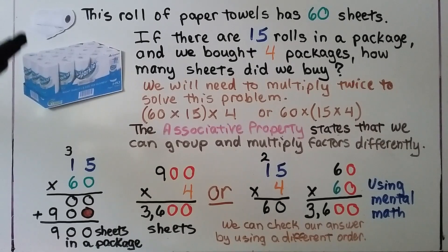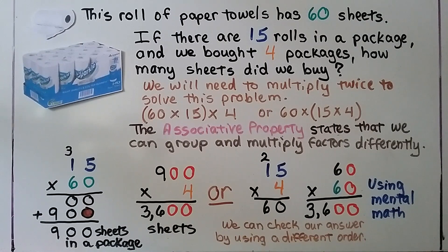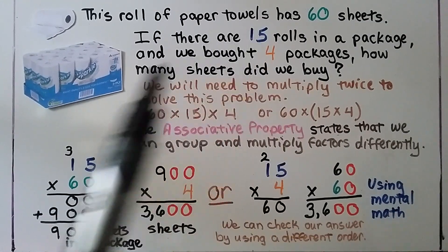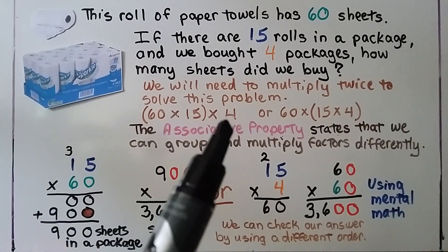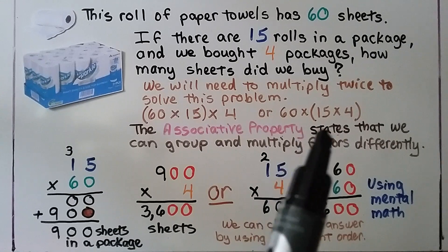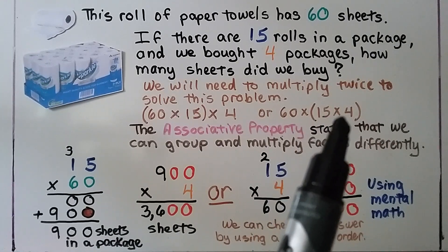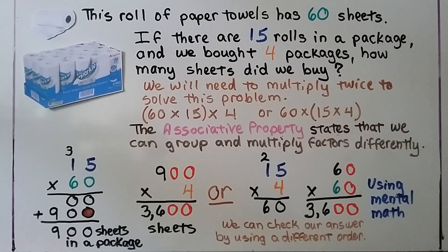This roll of paper towels has 60 sheets. If there are 15 rolls in a package, and we bought 4 packages, how many sheets did we buy? We're going to need to multiply twice to solve this problem. We multiply 60 sheets times 15 rolls to find how many sheets are in one big package, then multiply that times 4 to know how many sheets are in 4 packages. We can also multiply 15 rolls times 4 packages first, then multiply by 60 sheets, because the associative property states we can group and multiply factors differently and get the same product.